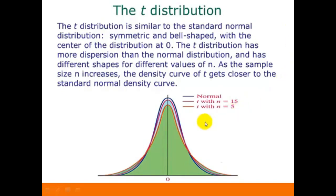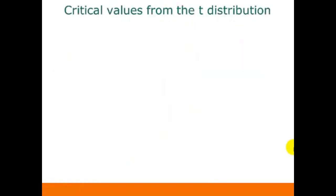Here's a picture of a couple of t-distributions for different sample sizes. The one on the very top is the standard normal distribution. The one on the bottom is a t-distribution when n is equal to 5, and the one in the middle is a t-distribution when n is equal to 15. You can see that as n gets bigger, the distribution gets closer to looking like the standard normal distribution. To construct confidence intervals that estimate a population mean, part of the formula involves finding critical values from the t-distribution.